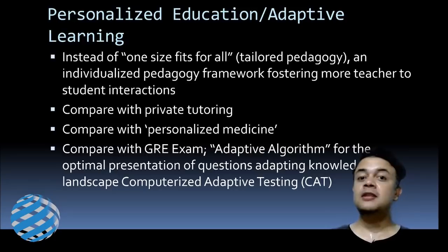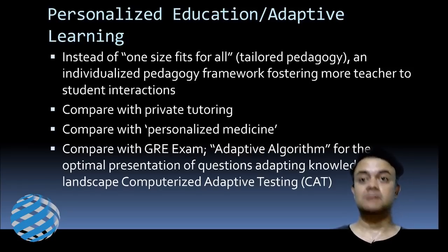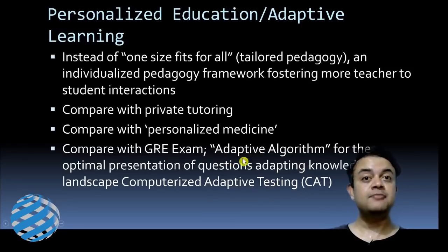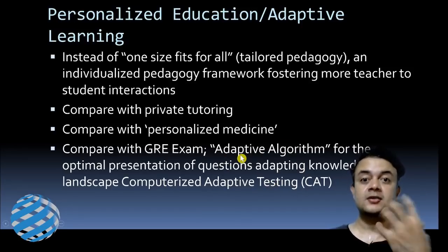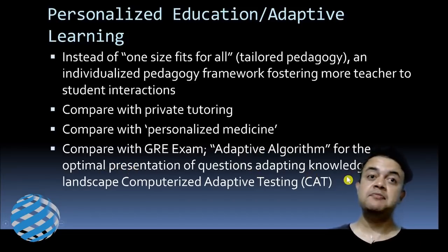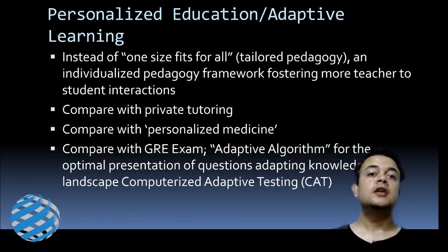You can compare personalized education with the GRE or other computerized adaptive testing (CAT) exams. These use an adaptive algorithm that learns based on your trials and optimally presents questions by adapting to the knowledge landscape of the student.